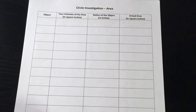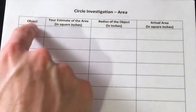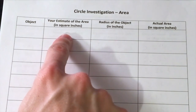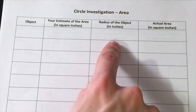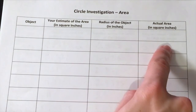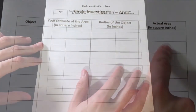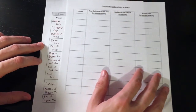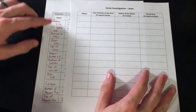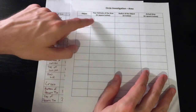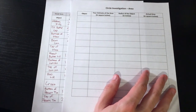So first, I have another data table that you can create — four columns again. The first column is the object, the second column is going to be the estimate of the area, the third is the radius of the object, and the fourth is the actual area according to our measurements. You can use your previous data table and transfer over the names of the objects onto your new data table.